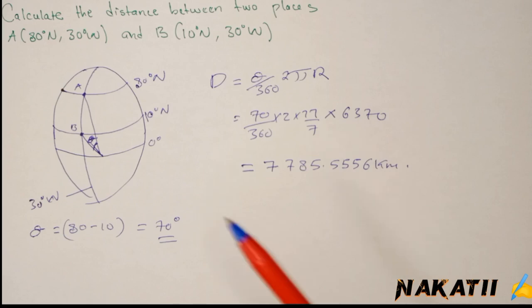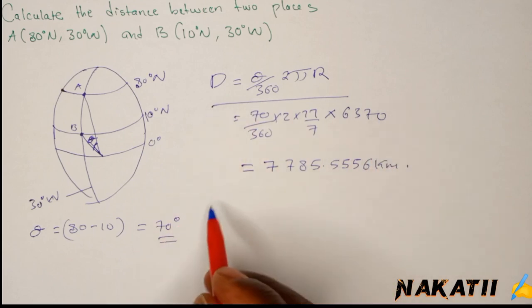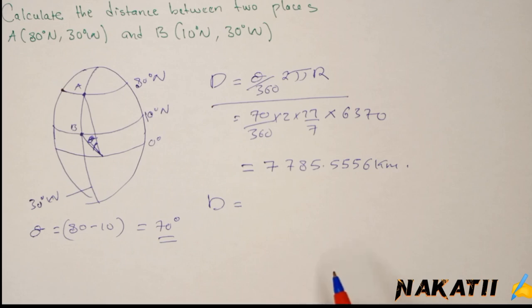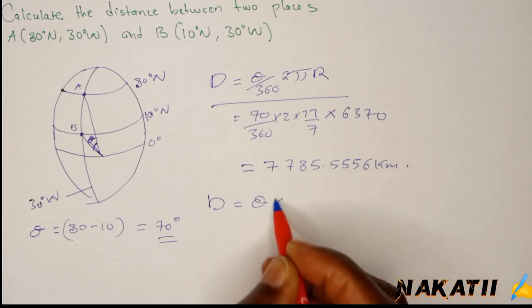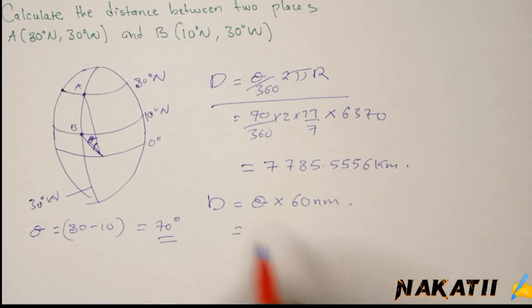You can give your answer in nautical miles, because the question is very open. If it is in kilometers and is on a great circle, we use that formula. If the two points are on a great circle and we want to find the distance in nautical miles, we say it is theta multiplied by 60. So this one could have been theta, which is 70, times 60 nautical miles, which equals 4200 nautical miles.